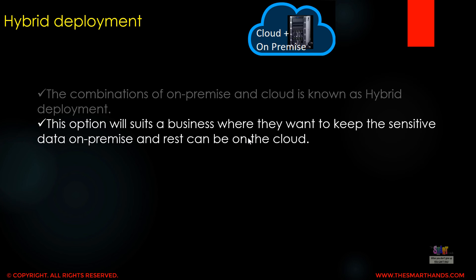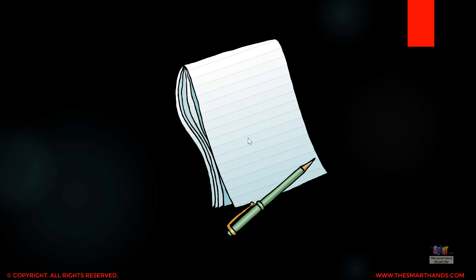Hybrid deployment suits a business where they want to keep sensitive data on-premise while other data is on the cloud. For example, a company may have sensitive customer-related data, CRM data, or finance-related data that they want to keep in-house, while all other data can be on the cloud. In that case they can go for hybrid deployment, which is a combination of cloud and on-premise solution. That's all about this — thank you very much for watching.